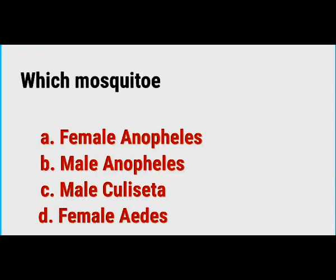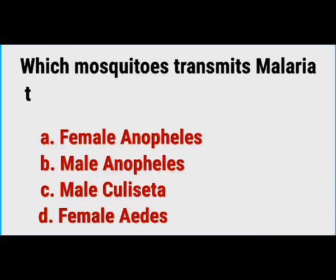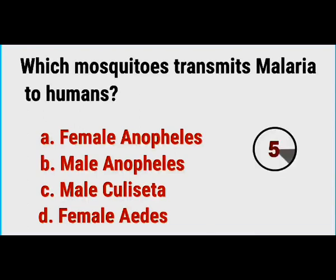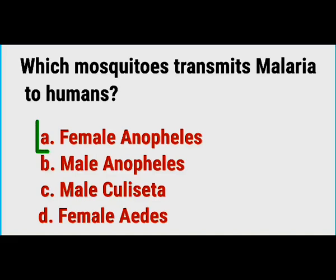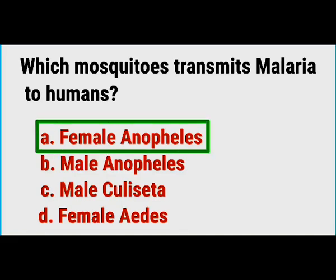Which mosquito transmits malaria to humans? Correct answer is the female Anopheles mosquito.